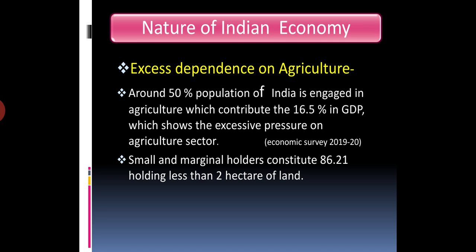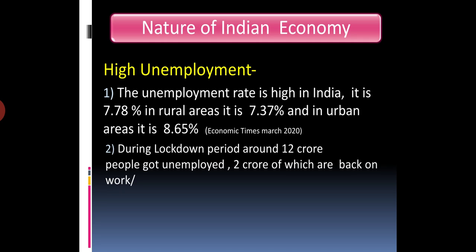The next characteristic is excess dependence on agriculture. In India, 50% of the population works in agriculture, yet the agriculture sector contributes only 16.5% to GDP. This means that a large portion of the population is dependent on agriculture. Additionally, farmers with less than 2 hectares of land make up 86% of farmers, showing the heavy pressure on the agriculture sector.